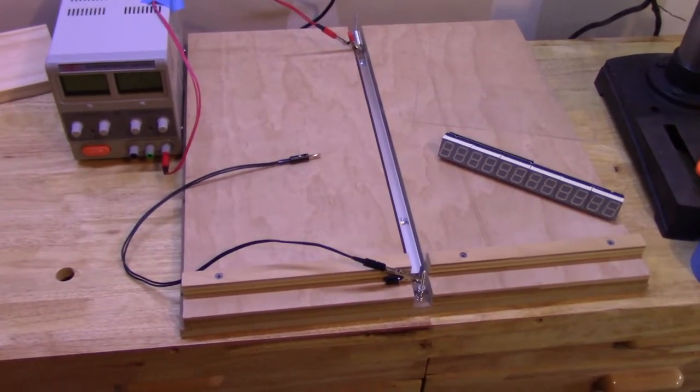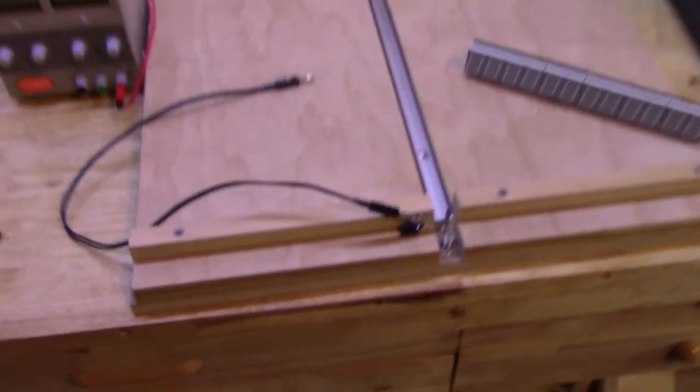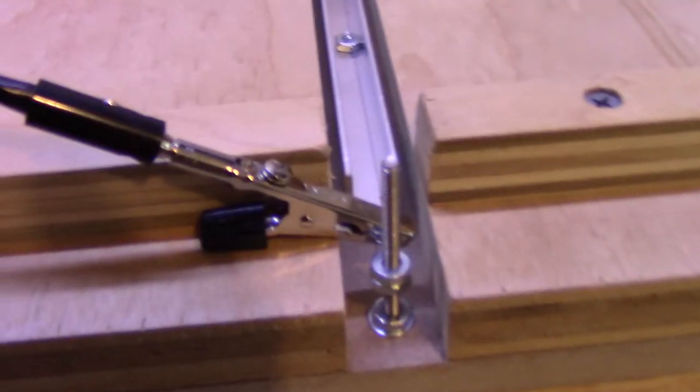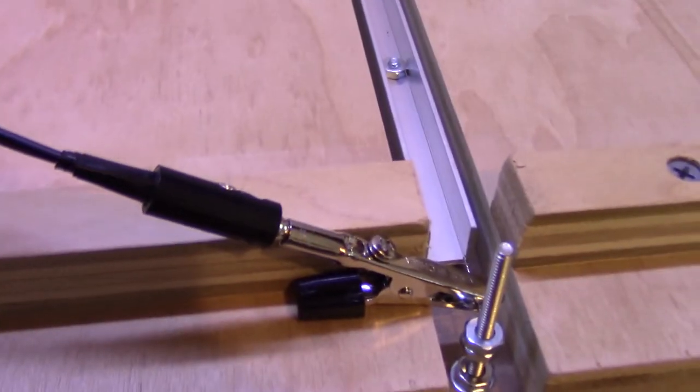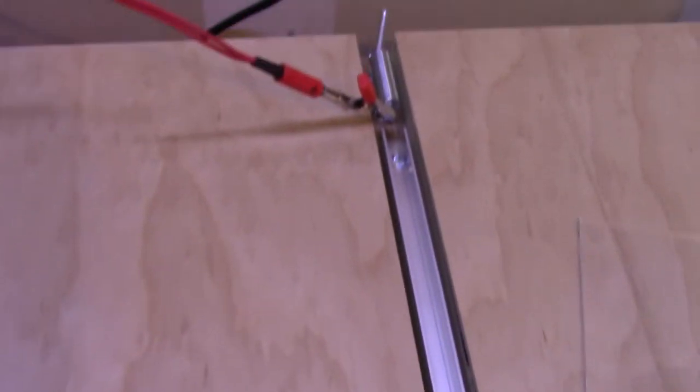What we're going to use is this acrylic bender that I built after seeing a similar post on Hackaday about someone building something similar. All that it is is an aluminum channel with a bit of nichrome wire strung across from one end to the other.